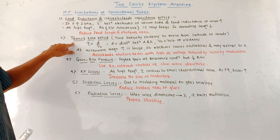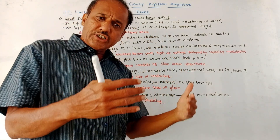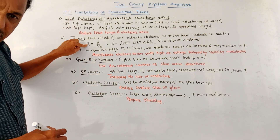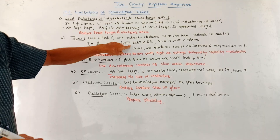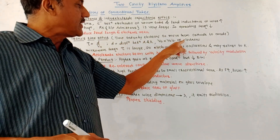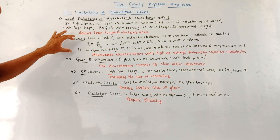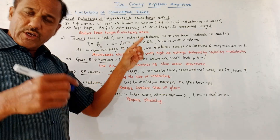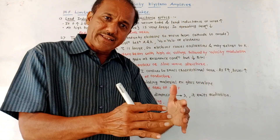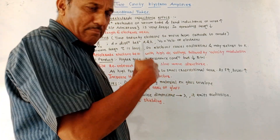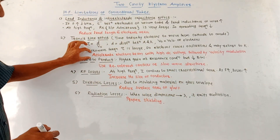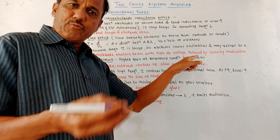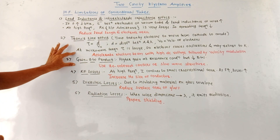The second limitation is transit time effect. Transit time is the time taken by the electrons to move from cathode to anode. It is denoted by tau and is given by D divided by V0, where D is the distance between anode and cathode, and V0 is the velocity of electrons. At microwave frequencies, the value of transit time is large, so electrons cause back and forth oscillations. It may happen that some electrons return back to the cathode. The remedy for this is to accelerate the electron beam with high DC voltage, followed by a voltage modulation process.